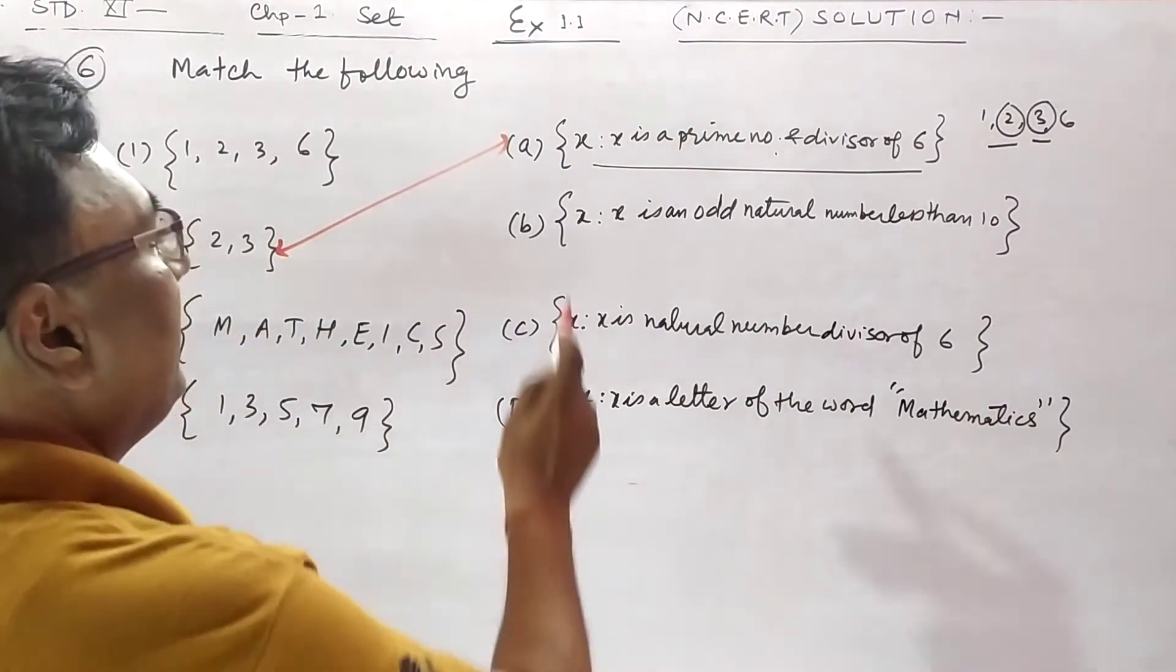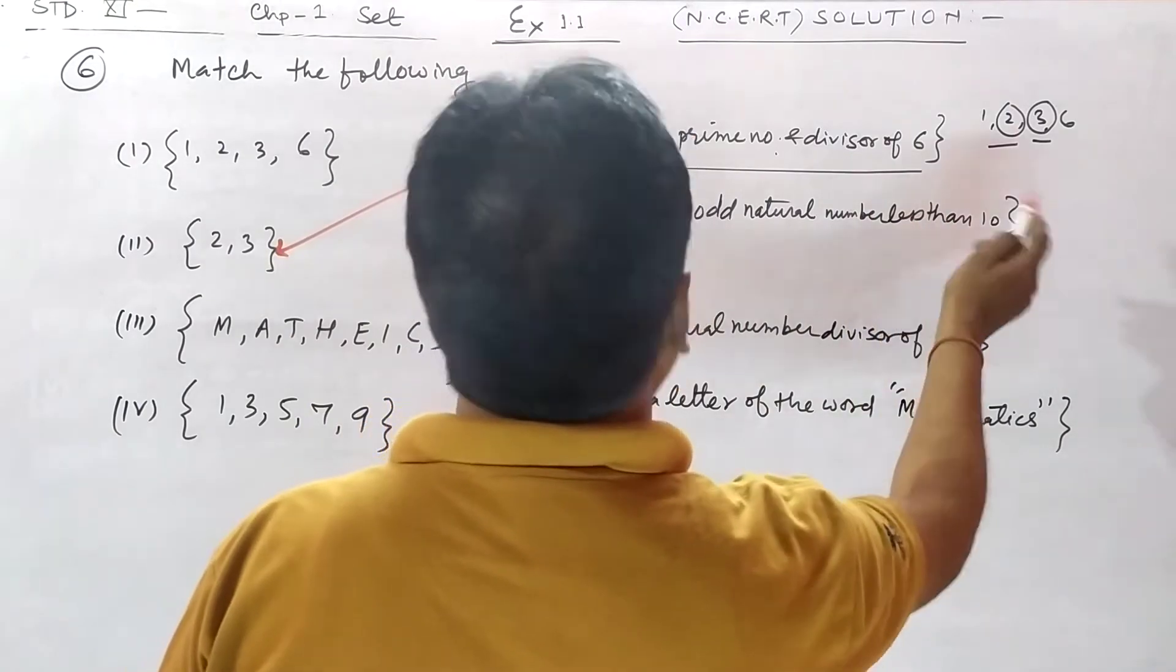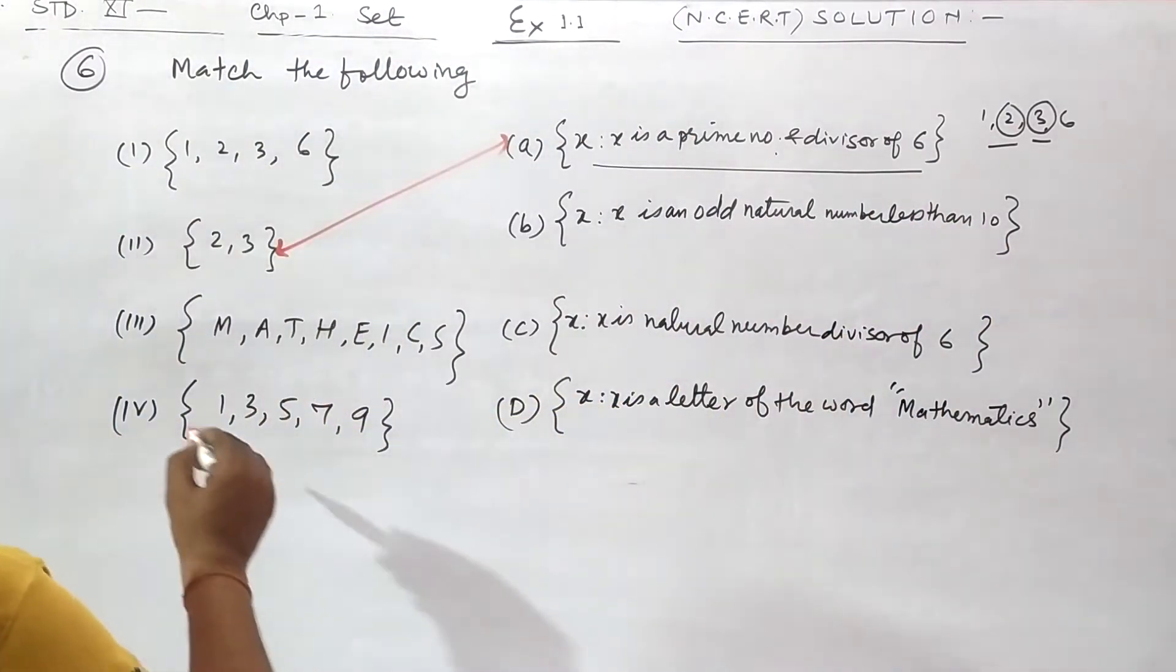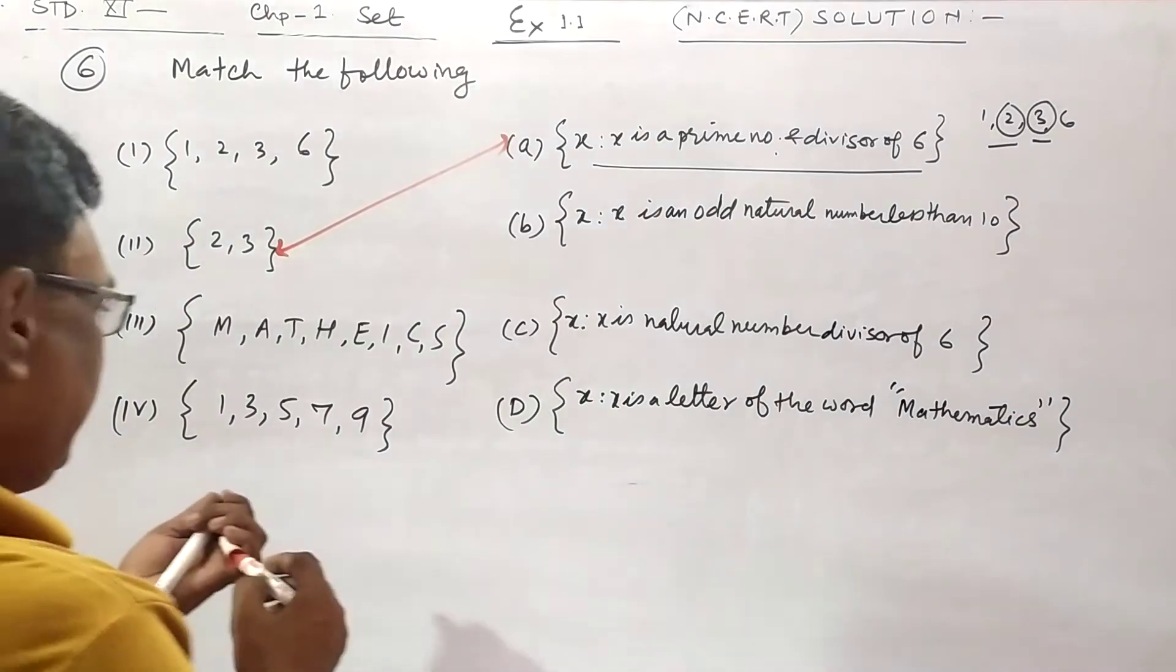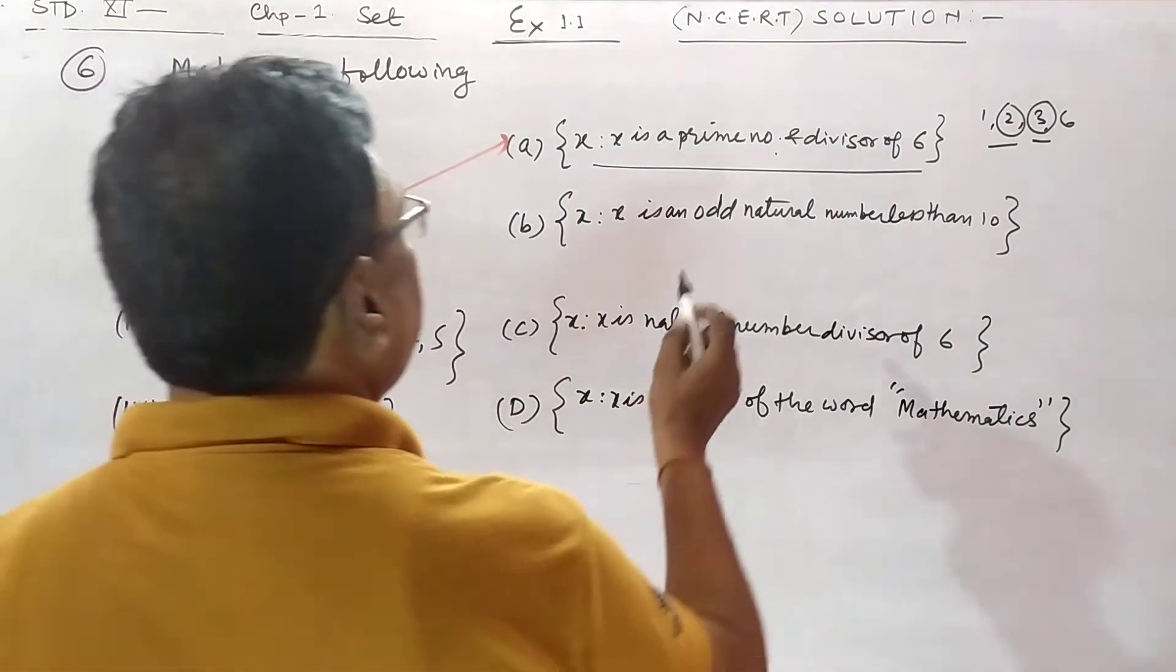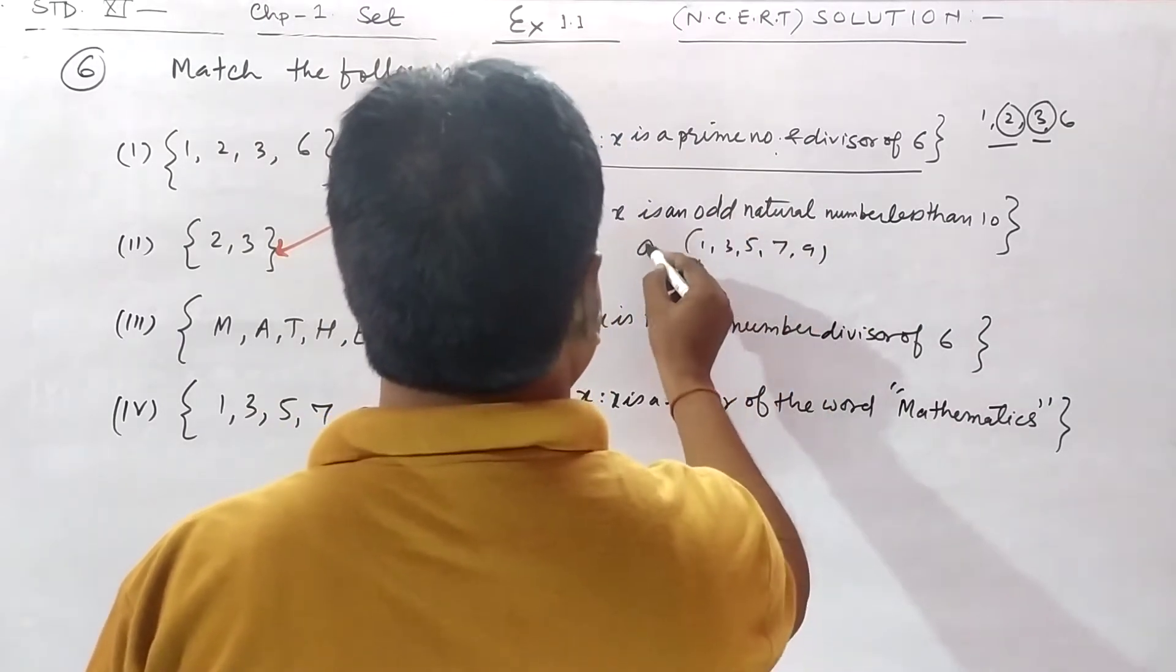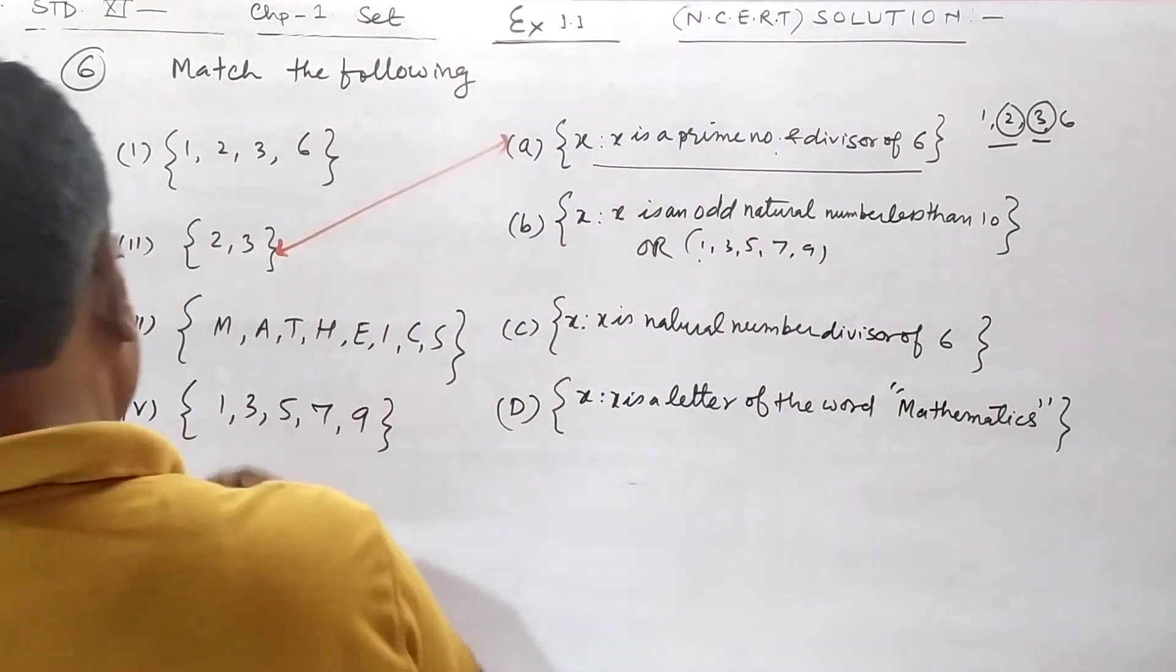Next, x is an odd natural number less than 10. Odd natural numbers less than 10 are 1, 3, 5, 7, 9. It means this.